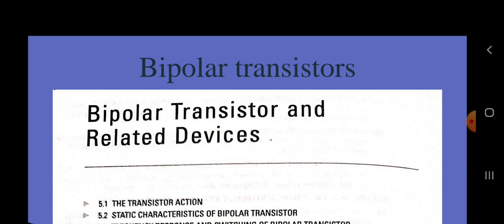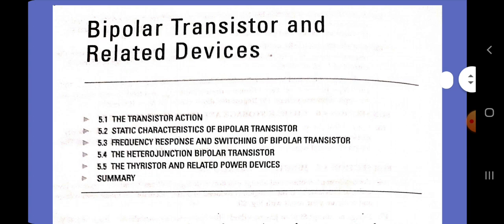We consider the transistor action of the coupled junctions and derive the static characteristics from the minority carrier distributions in the regions. We also discuss the frequency response and switching behavior of the transistor. In addition, we briefly consider the heterojunction bipolar junction transistor, in which one or both PN junctions are formed between dissimilar semiconductors. In the final section, a related device called a thyristor is introduced.